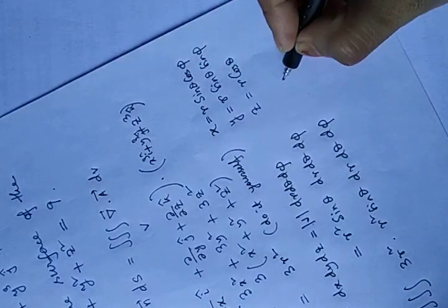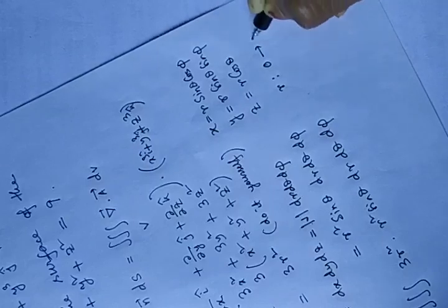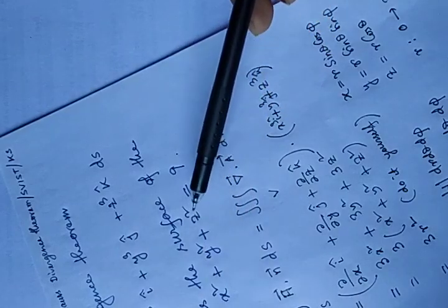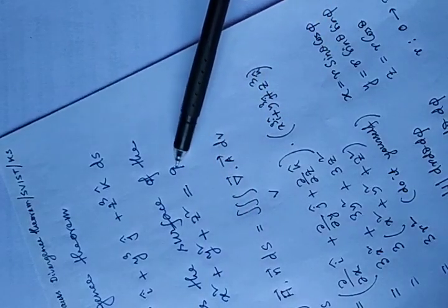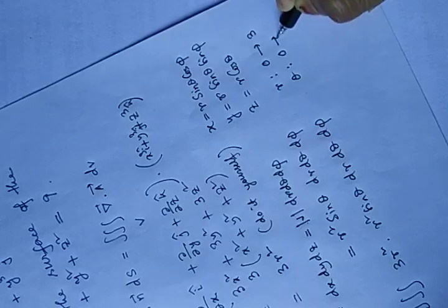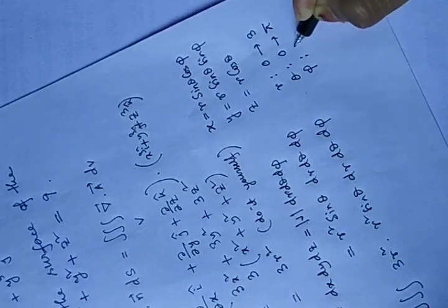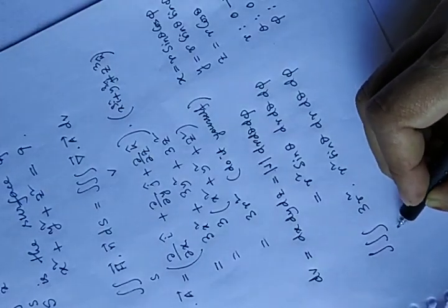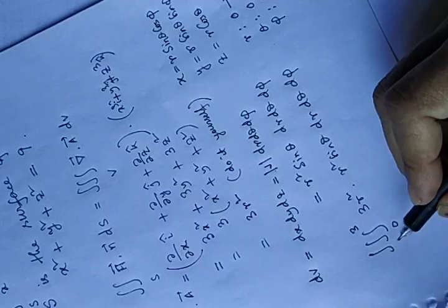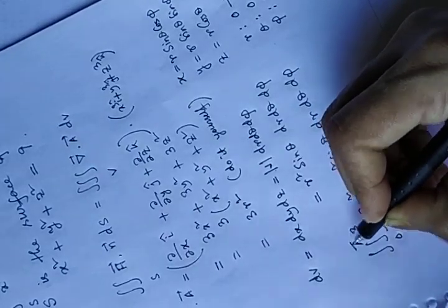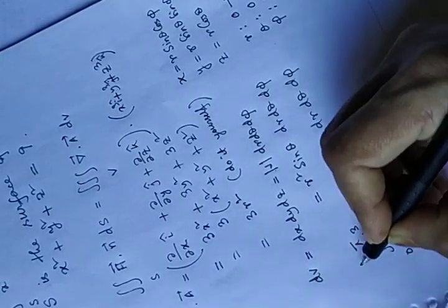In spherical polar coordinate r varies from 0 to 3. Here you see the sphere has been given x square plus y square plus z square equals to 9, which is 3 square, so r varies from 0 to 3 and theta varies from 0 to pi. So you put here r limit as 0 to 3, theta limit as 0 to pi and phi limit as 0 to 2 pi.